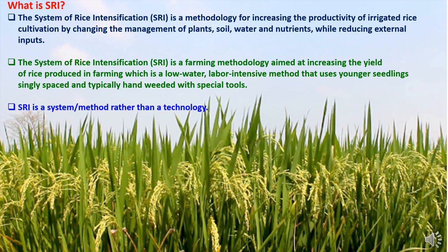The System of Rice Intensification is a methodology for increasing the productivity of irrigated rice cultivation by changing the management of plants, soil conditions, water requirements, and nutrients while reducing external inputs. SRI is also defined as a farming methodology aimed at increasing the yield of rice, which is a low-water, labor-intensive method that uses younger seedlings, singly spaced and typically hand-weeded with special tools. SRI is a system or method rather than a technology.